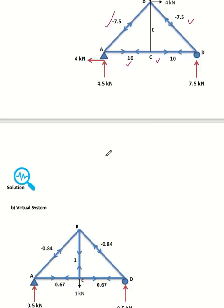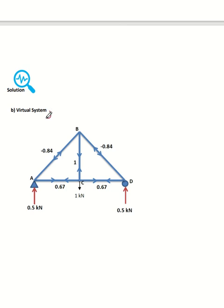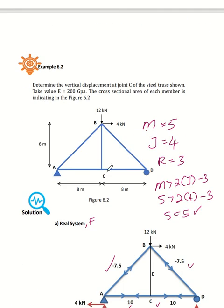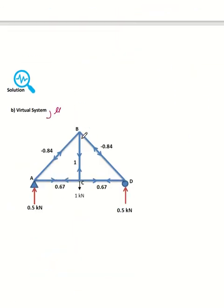After finding the internal forces for the real system, we set up the virtual system, which is denoted by the symbol mu (μ). We redraw the truss and calculate again using the virtual system. For the virtual system, we ignore all the external loads — so the 12 kilonewton and 4 kilonewton loads are ignored.